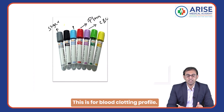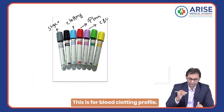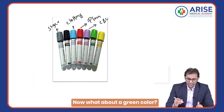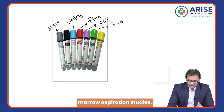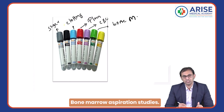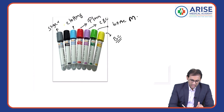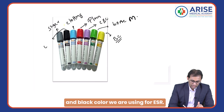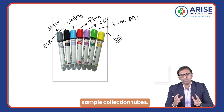The gray color tube is especially for sugar. The sky blue color tube is for blood clotting profile. The green color tube is for bone marrow aspiration studies. The yellow color tube is for blood culture.